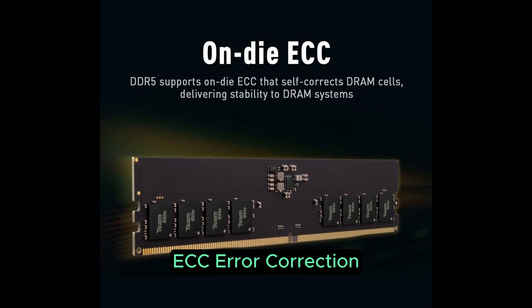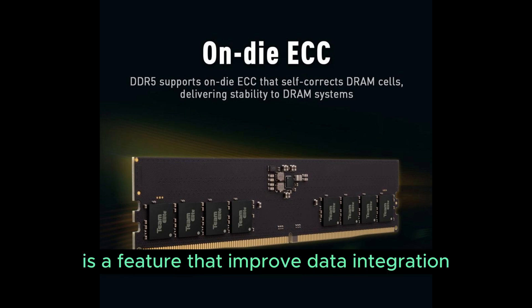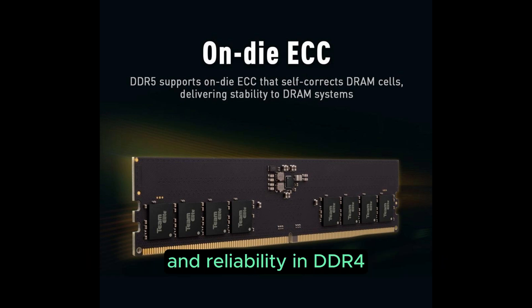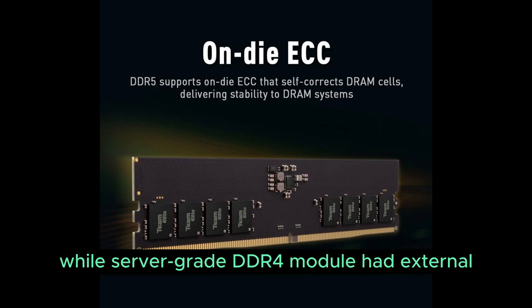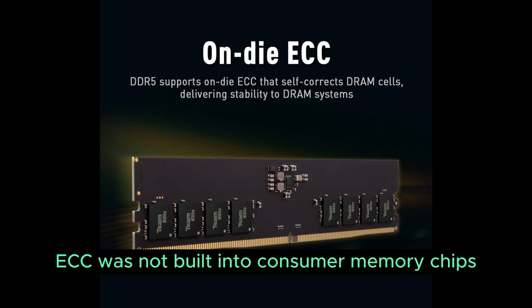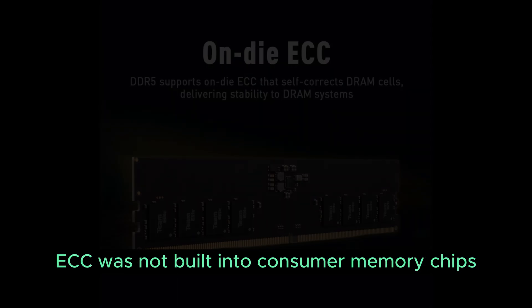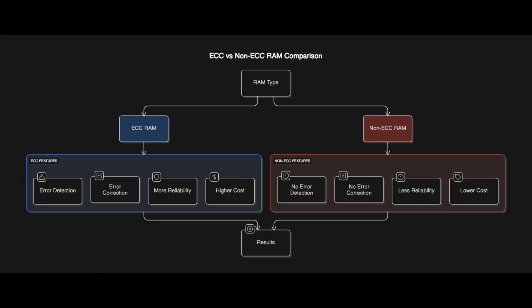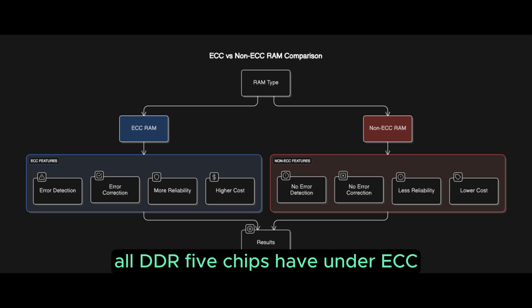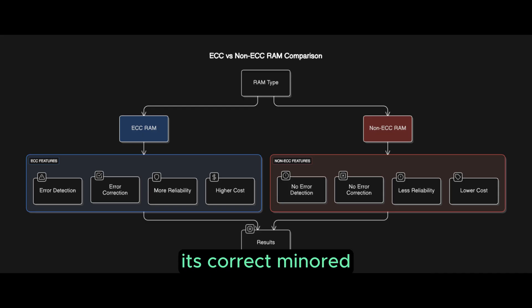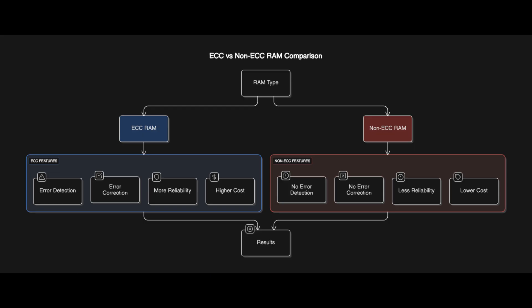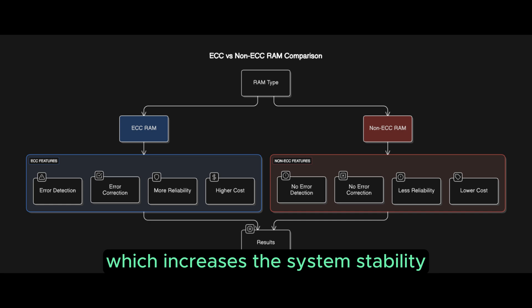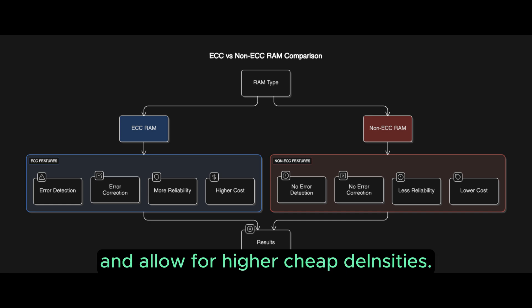ECC, or Error Correction Code, is a feature that improves data integrity and reliability. In DDR4, on-die ECC was not a standard feature; server-grade DDR4 modules had external ECC, but it was not built into consumer memory chips. In DDR5, on-die ECC is built directly into all memory chips. It corrects minor internal data errors before they can cause problems, which increases system stability and allows for higher chip densities.